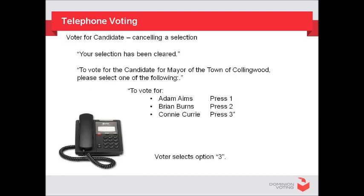To cancel your selection, you would press the star key. The recording will state that your selection has been cleared, followed by: 'To vote for the candidate for mayor of the town of Collingwood, please select one of the following: to vote for Adam Ames, press 1; Brian Burns, press 2; Connie Curry, press 3.' In this example, the voter selects option 3.